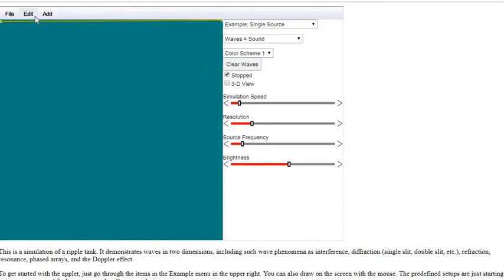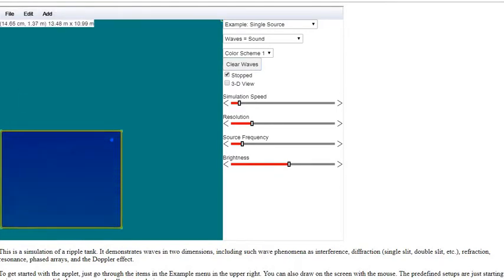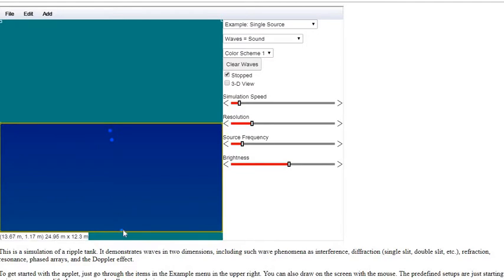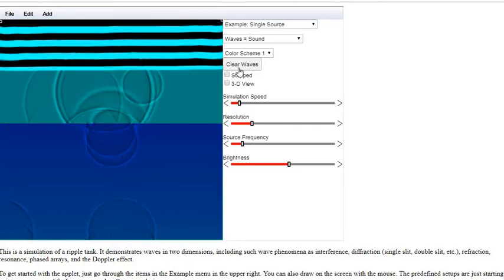Let's clear the waves. And then I also want to add a shallower region in the water. So I'm just going to make the whole bottom half of this to be a shallower region.